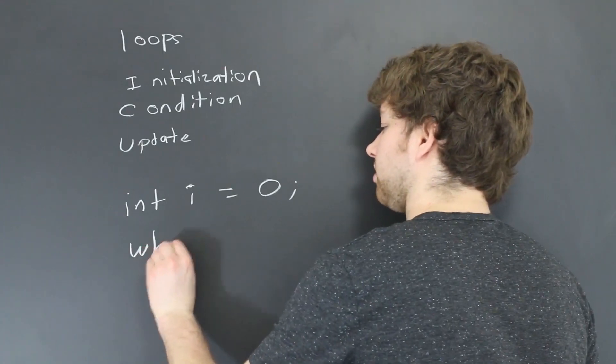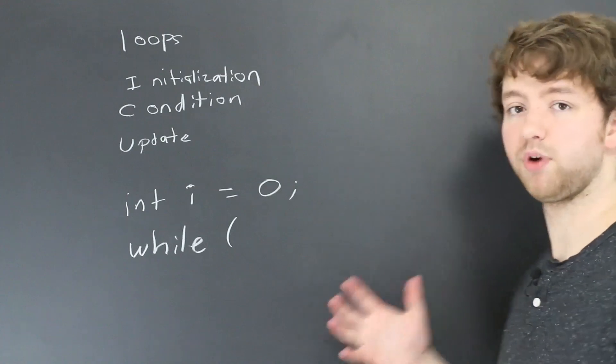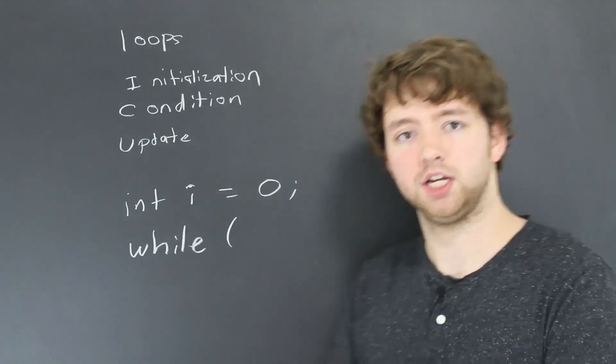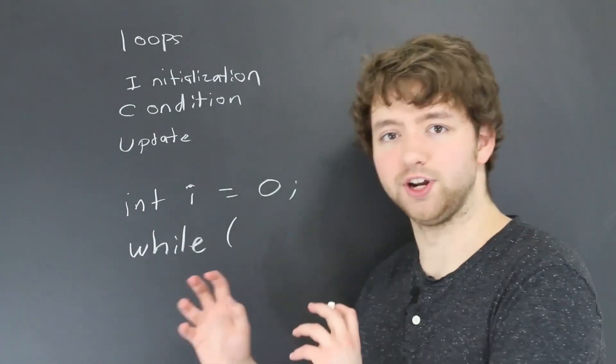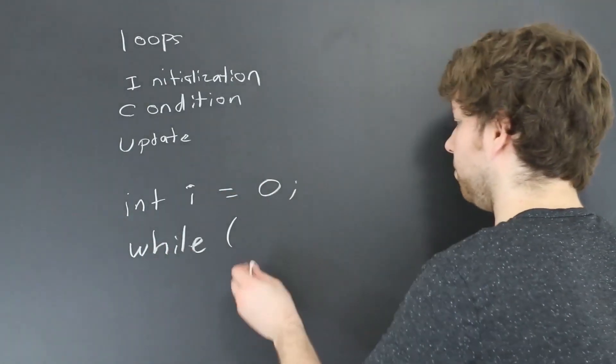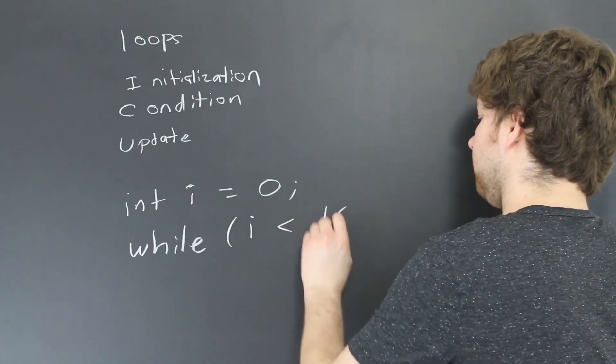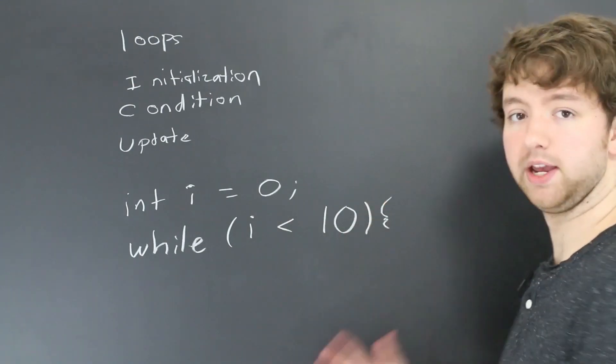Then we have a condition. So we do something like this. While, and then in parentheses, we put some kind of expression that's going to either evaluate to true or false. So basically the code is only going to execute on certain conditions.